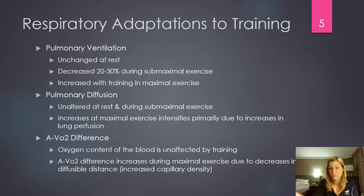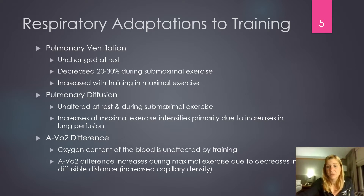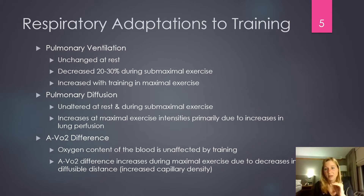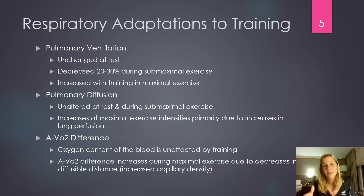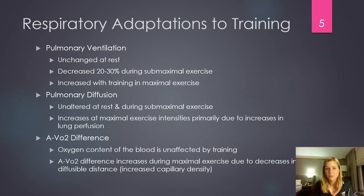Maximal pulmonary ventilation will increase, and the absolute level at which we reach that threshold will also increase. Maybe an untrained person reaches their maximal exercise capacity at seven miles per hour, and as they become more trained they're able to reach that level at nine miles per hour. The absolute intensity goes up, and therefore pulmonary ventilation goes up.